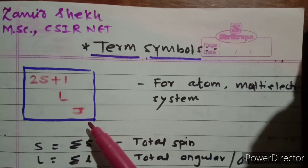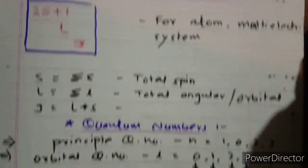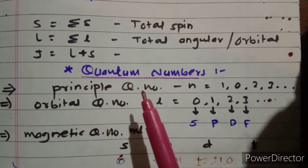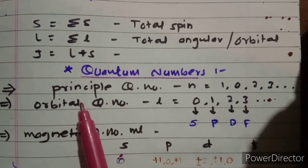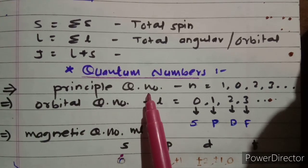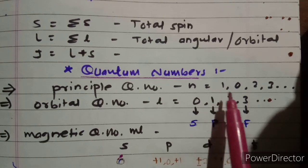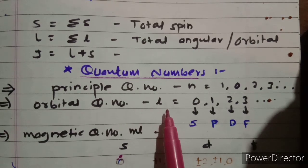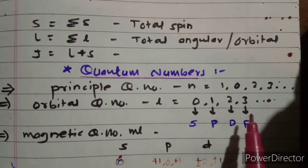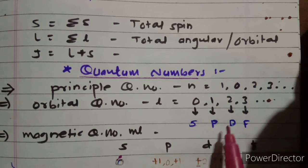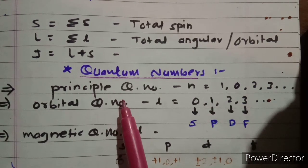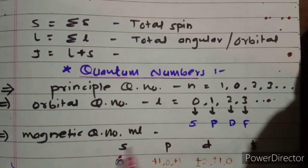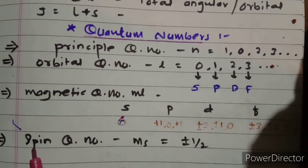J is the total angular quantum number. Before starting with term symbols, we must go through the quantum numbers. There are four different types: first is the principal quantum number, which decides the energy levels, starting from 1, 2, 3, 4, etc. Second is the orbital quantum number, denoted by small l and represented by 0, 1, 2, 3 — indicating s, p, d, f. The principal quantum number decides the energy level; the orbital quantum number decides the sub-energy level.